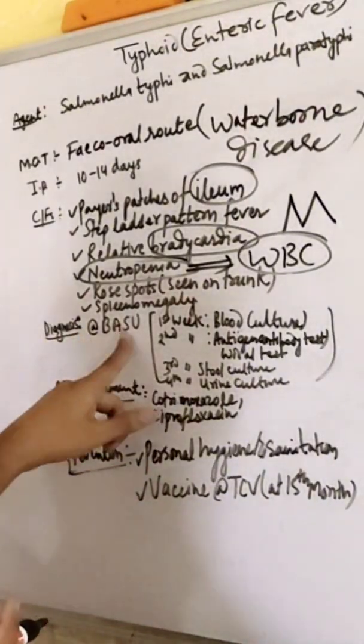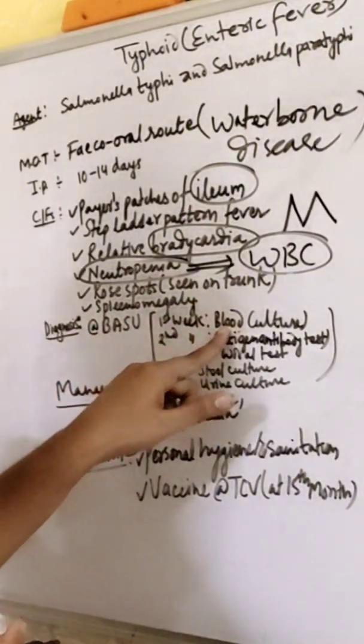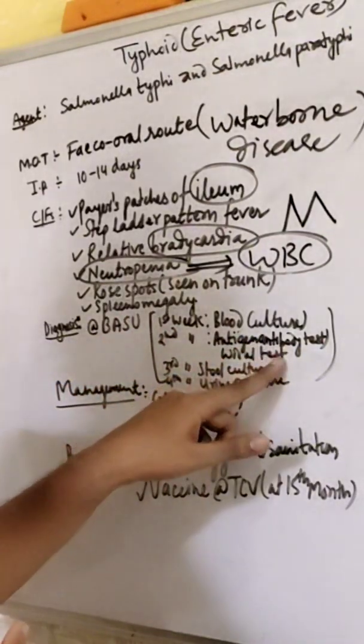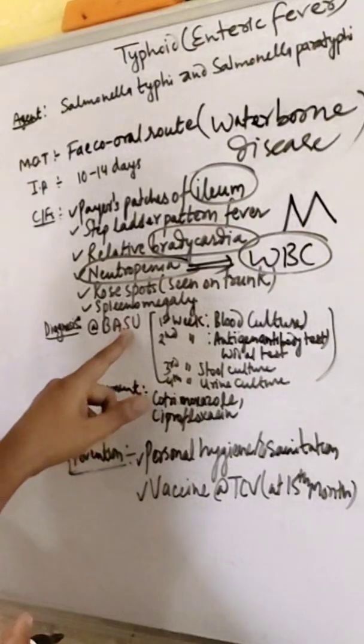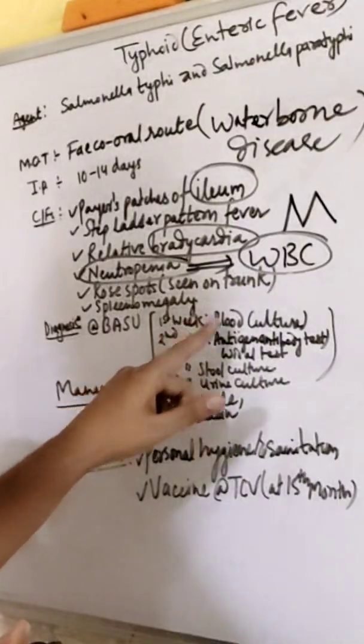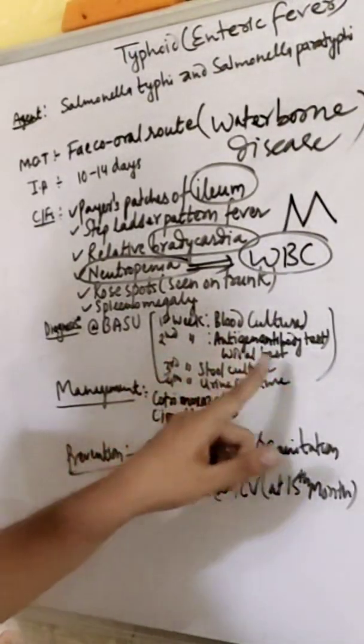What is the diagnosis? BASU. B stands for blood culture. A stands for antigen antibody test - we call it Widal test. S stands for stool culture. U stands for urine culture. First week blood culture, second week Widal test, third week stool, and fourth week is urine.